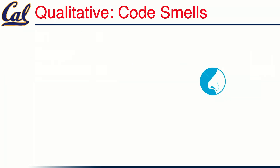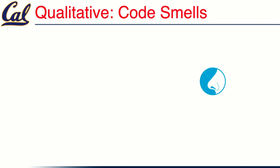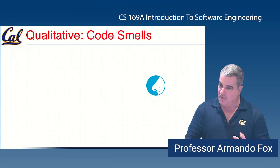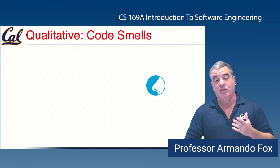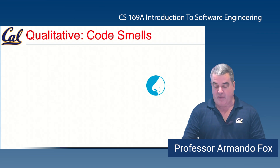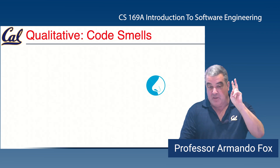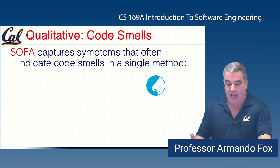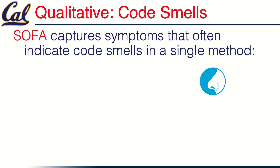The first qualitative thing is code smells. A code smell is something where the code works correctly, but you look at it and the mature programmer in you says something doesn't feel right about this code and I can't necessarily put my finger on it. We can talk about a few of the things that can lead to code smelling bad. I came up with an acronym — and this one is not part of the literature, this is just me.